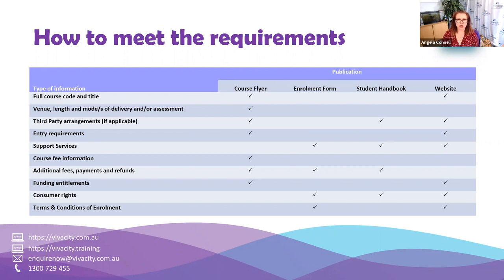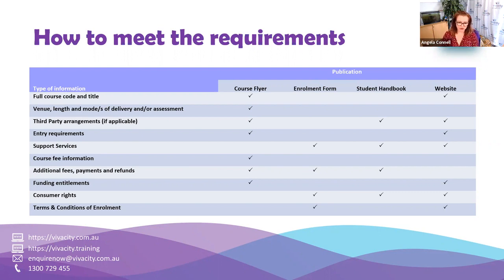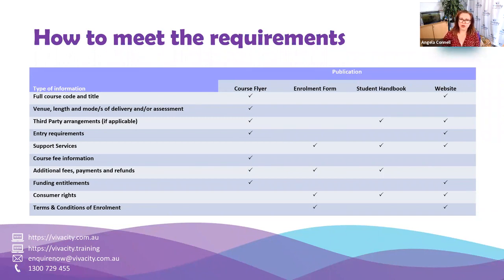What are your entry requirements — age, work requirements, other licence requirements, or prior training they need to have completed? What support services will you provide and how will you support the student throughout their training? How are you going to identify what those support services are for each individual student and meet their individual needs? This could include a language, literacy and numeracy assessment to identify the core skills the student has and what support they may need.